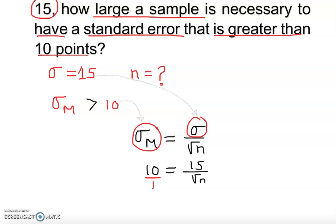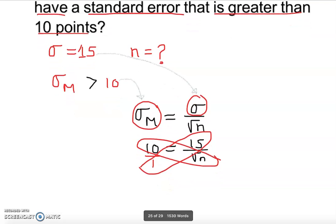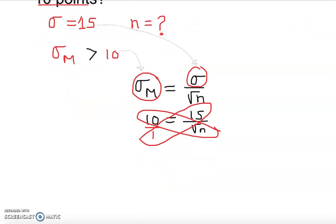Just cross multiply. It should give you something like that. Let me show you. Well, 10 times square root of n is equal to 15.